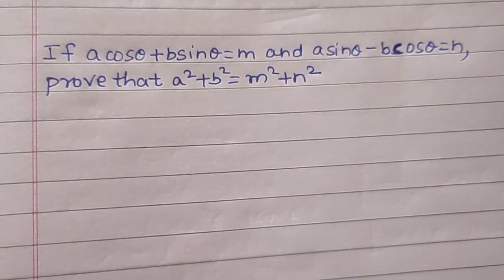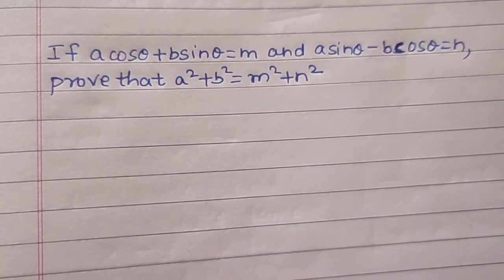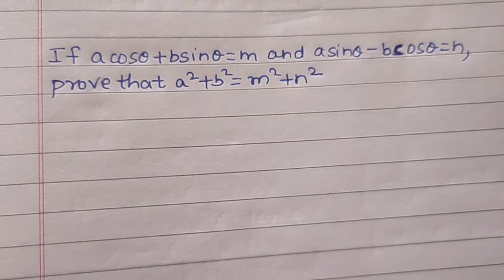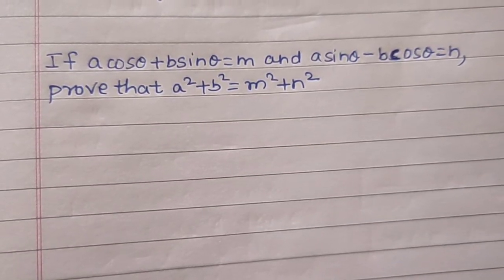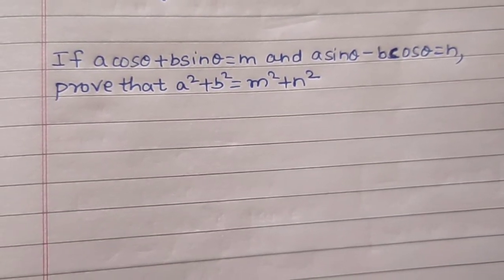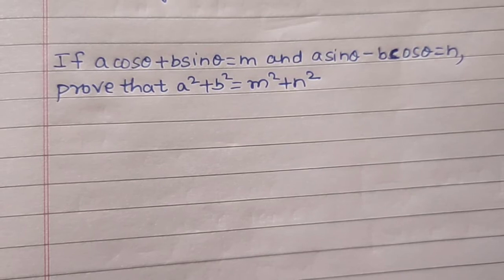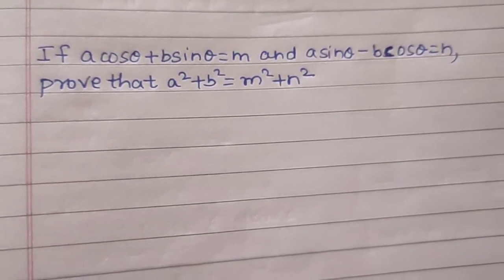Let's see this question: if a·cosθ + b·sinθ = m and a·sinθ - b·cosθ = n, we need to prove that a² + b² = m² + n².